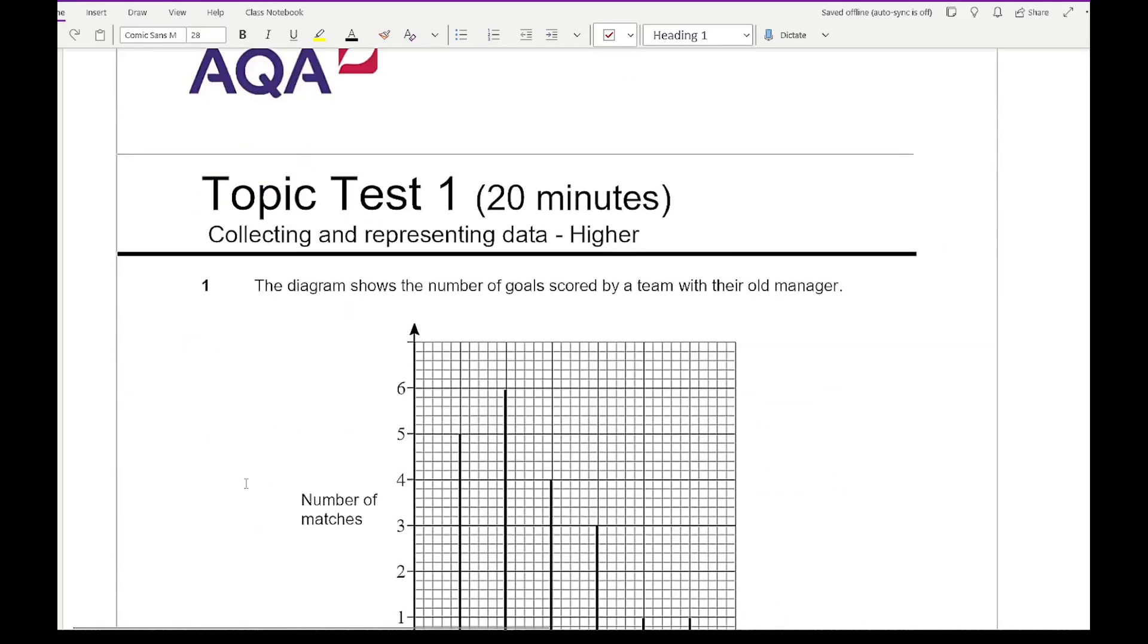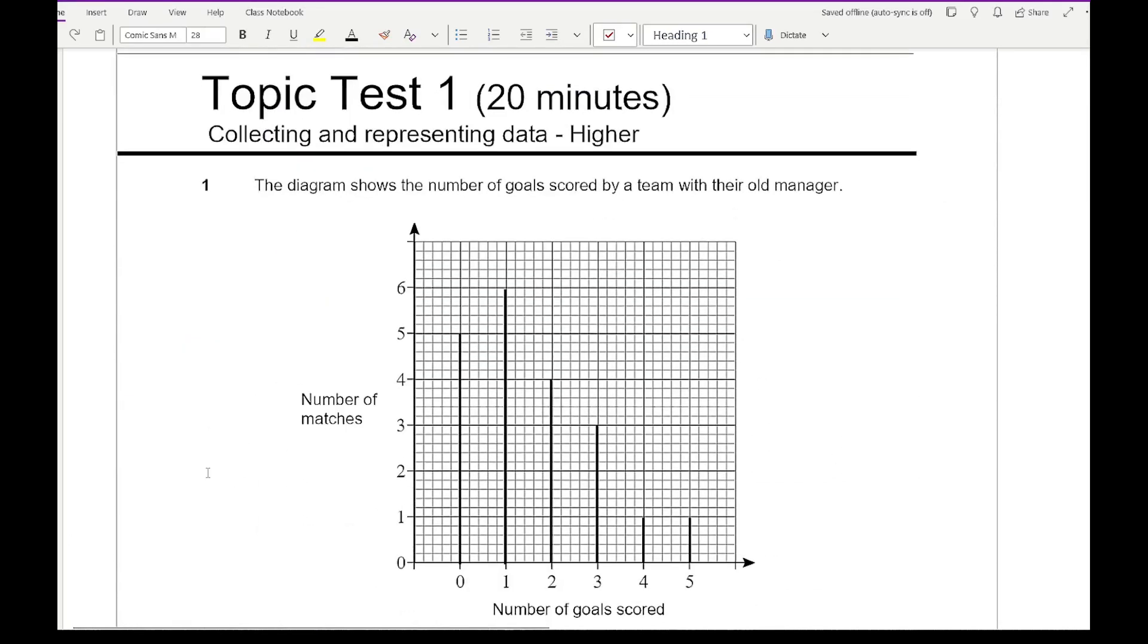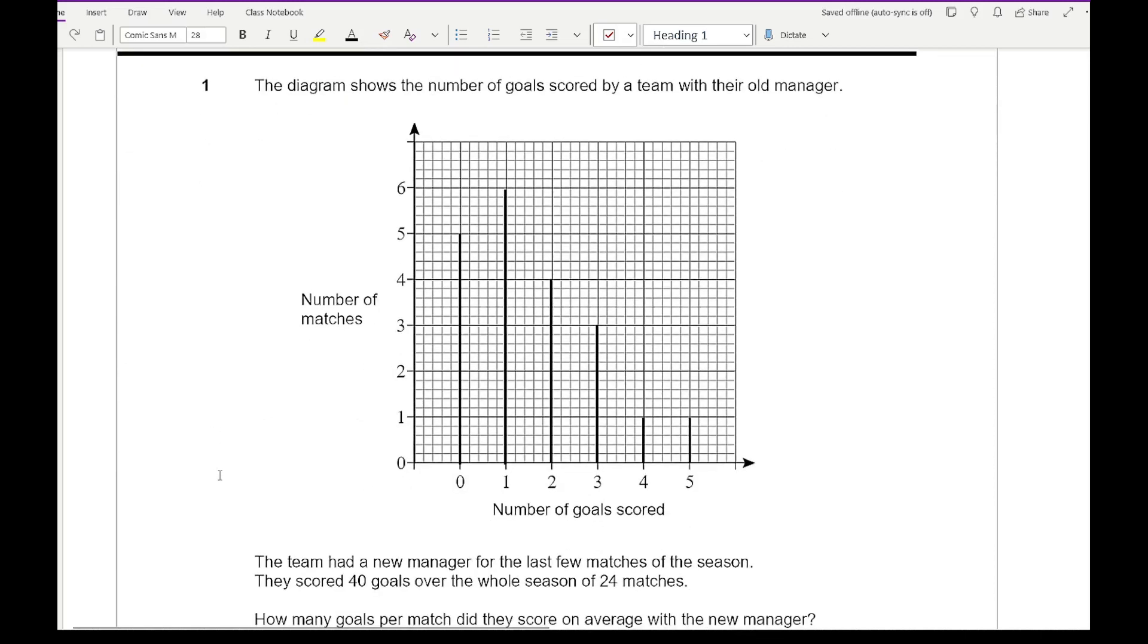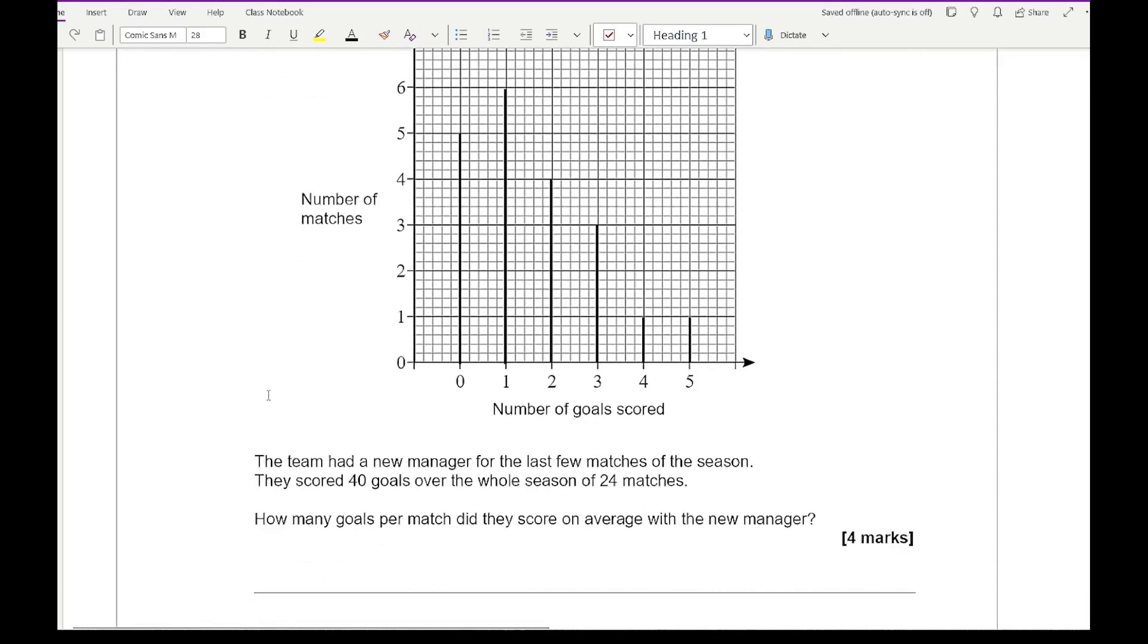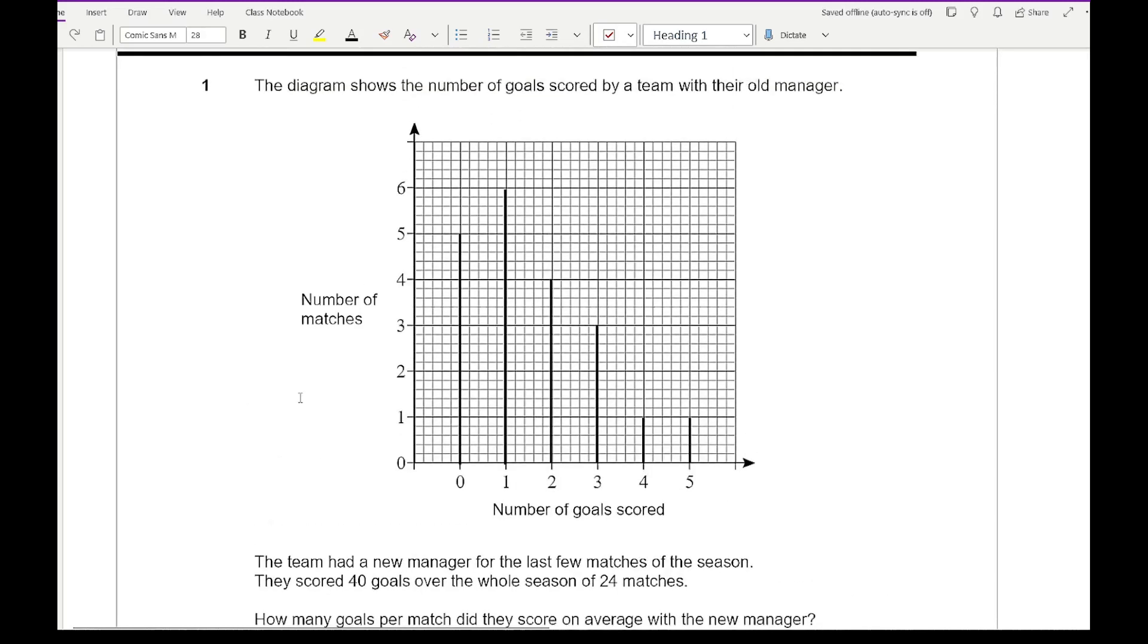Looking at question one, the diagram shows the number of goals scored by a team with their old manager. The team has had a new manager for the last few games of the season and scored 40 goals over the whole season of 24 matches. What we need to do first is get the data from the old manager which is represented by this line graph.